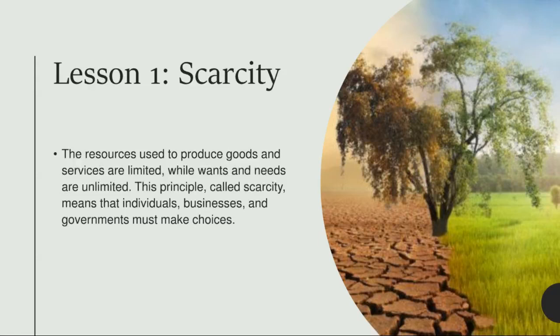Economists call the resources used to make goods and services factors of production. Factors of production are the resources used to make goods and services, and they are of three types: land, labor, and capital.